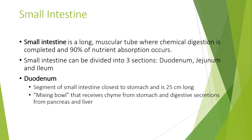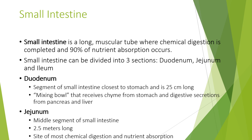The duodenum is the segment of the small intestine closest to the stomach and is 25 centimetres long. It acts as a mixing bowl that receives the chyme from the stomach and digestive secretions from the pancreas and liver. The jejunum is the middle segment of the small intestine. It is 2.5 metres long and is the site of most chemical digestion and nutrient absorption.